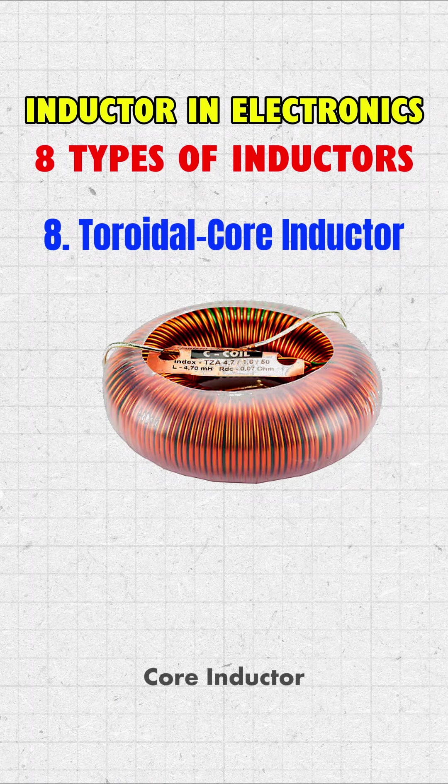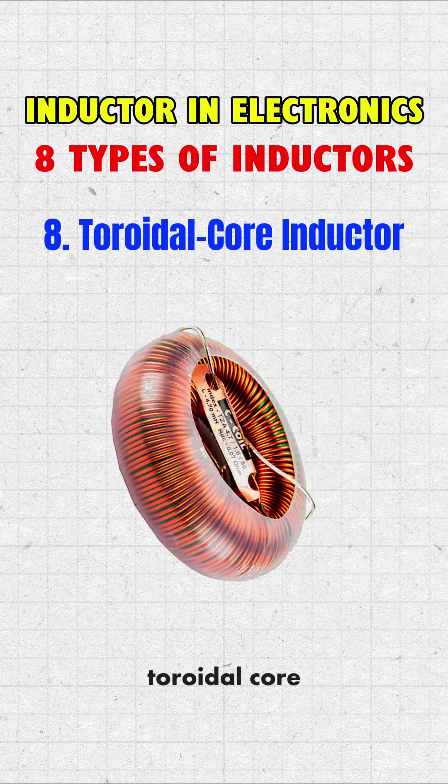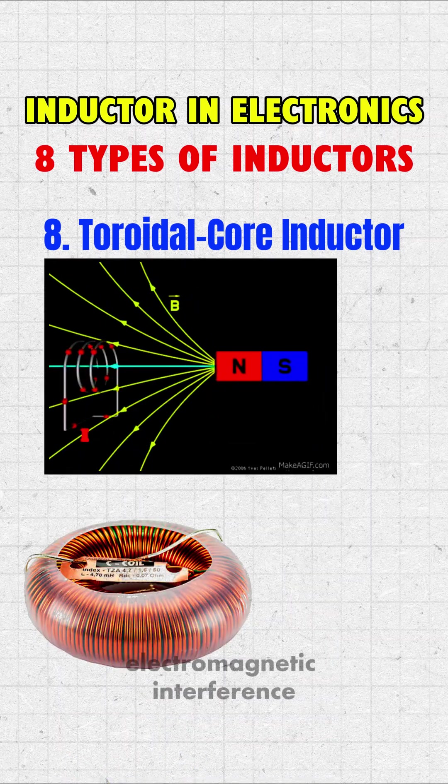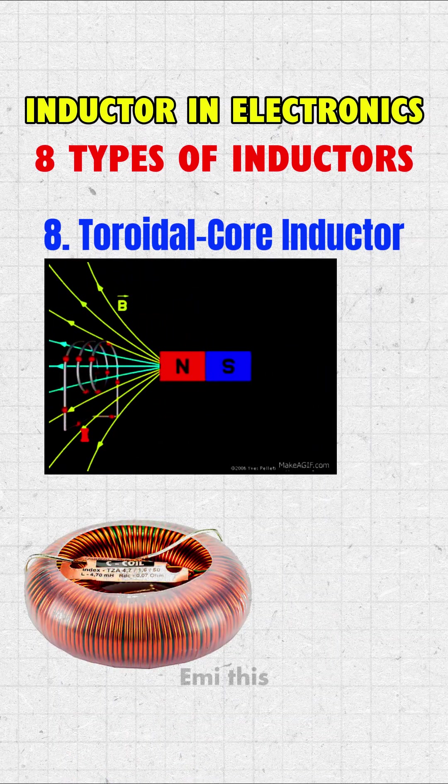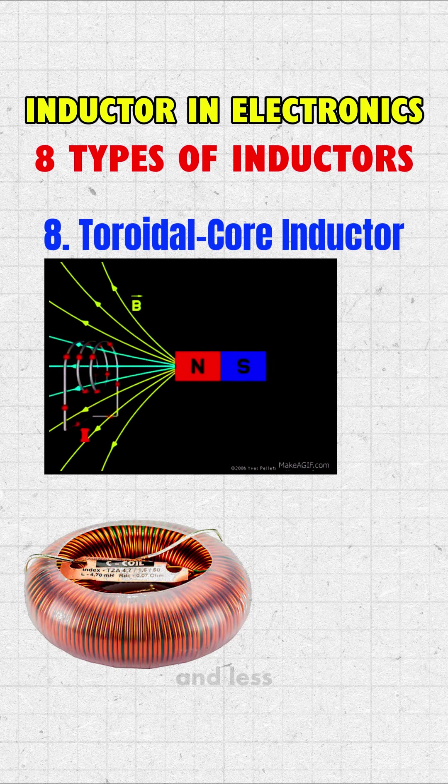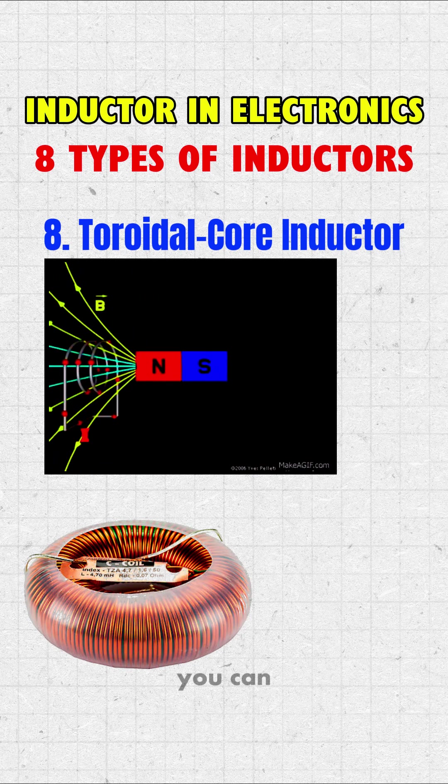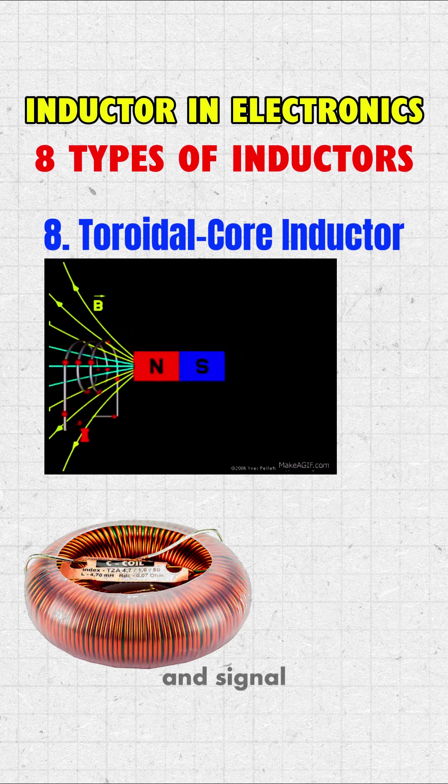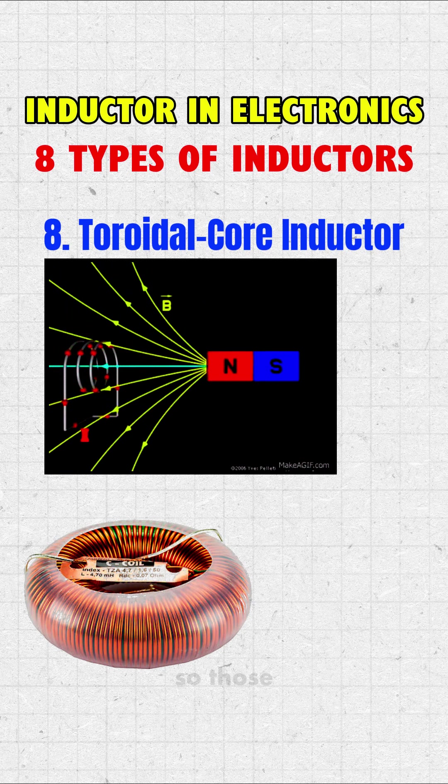8. Toroidal core inductor. Toroidal core inductors have a ring-shaped core, which helps in reducing electromagnetic interference (EMI). This shape allows for a stronger magnetic field and less energy loss. You can find these inductors in audio systems, power supplies, and signal processing circuits.